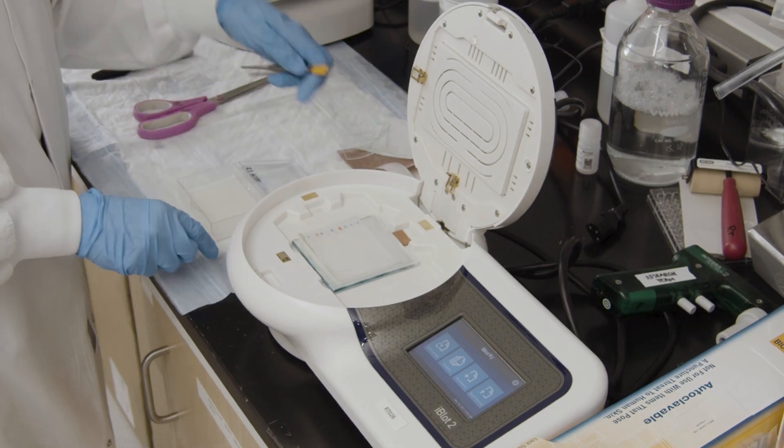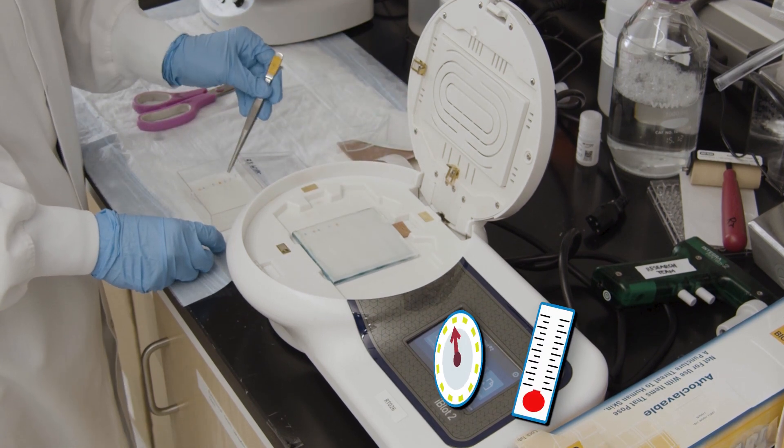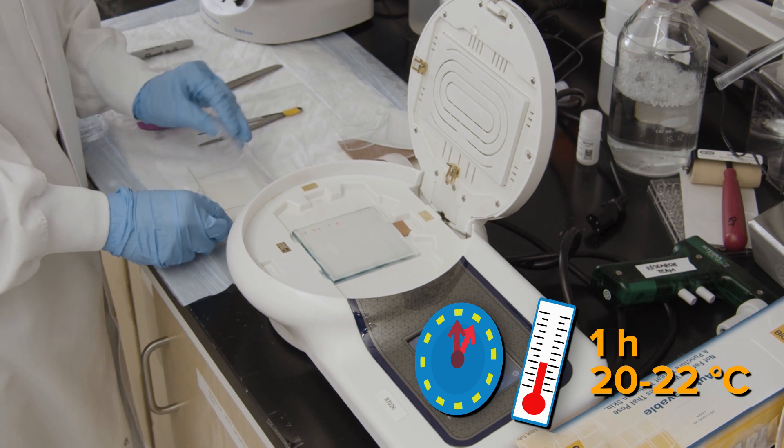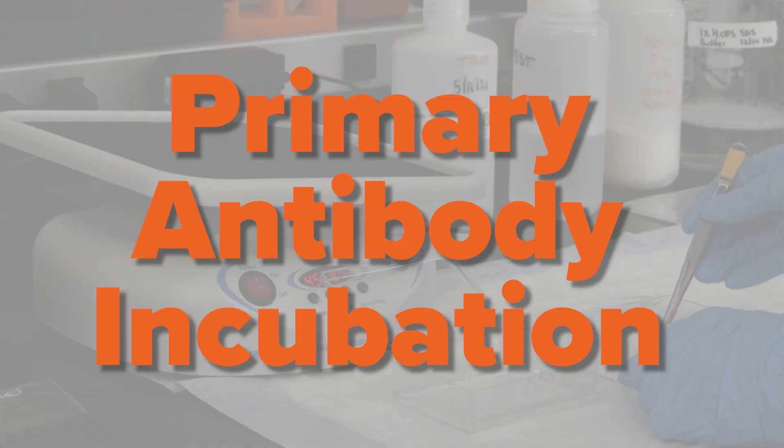Using forceps, carefully transfer the membrane to a container of blocking buffer and block for one hour at room temperature. The blocking buffer used, typically milk or BSA, is antibody dependent. So take care to refer to the antibody data sheet before preparing. Alright, you have about an hour until your gel is finished blocking. While you wait, you can prepare your primary antibody.